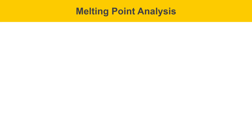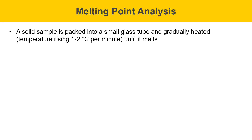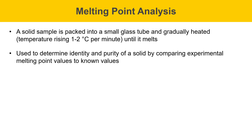Next, I'm going to talk about melting point analysis. In a melting point analysis, a solid sample is packed into a small glass tube — a capillary tube — and gradually heated, raising the temperature about 1 to 2 degrees Celsius per minute, until it melts. This technique is used to determine the identity and purity of a solid by comparing experimental melting point values to known values.